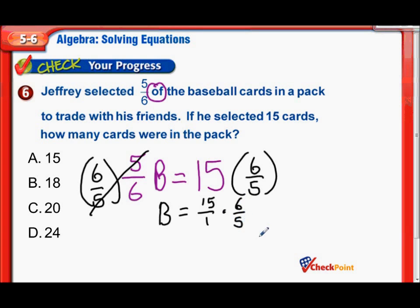Now is there any factoring we can do here? Oh yes. We can divide 15 and 5 by 5. 15 divided by 5 is 3, 5 divided by 5 is 1. Now let's multiply across. 3 times 6 is 18, and 1 times 1 is 1. 18 divided by 1 is 18. There it is. There were 18 cards in that pack.